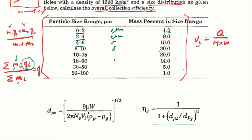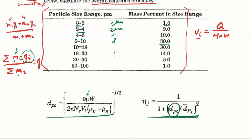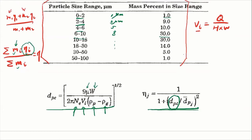To calculate the efficiency for each bin, we first need to calculate the cutoff size. To calculate the cutoff size, we use the DPC equation where we plug in all parameters: viscosity, width of the inlet, number of effective turns NE, inlet velocity, and particle density. The gas density compared to the solid density is negligible, so we don't need to include it.